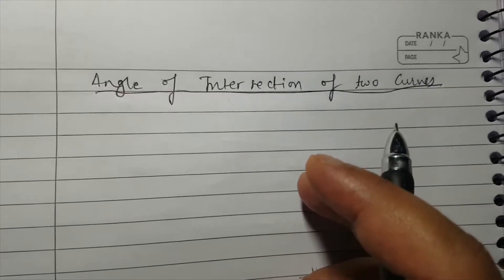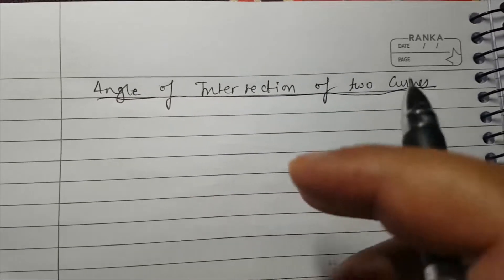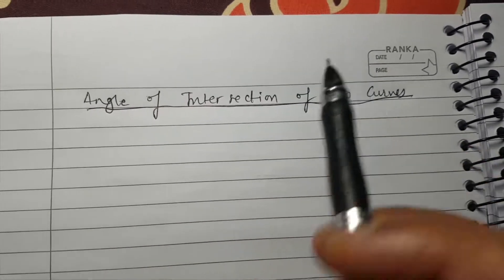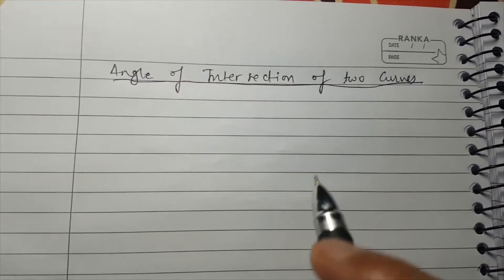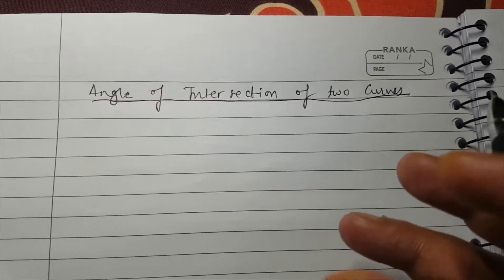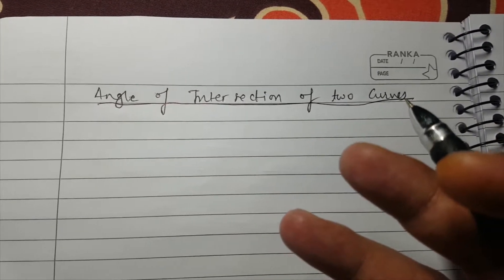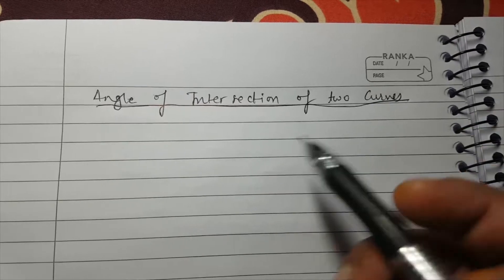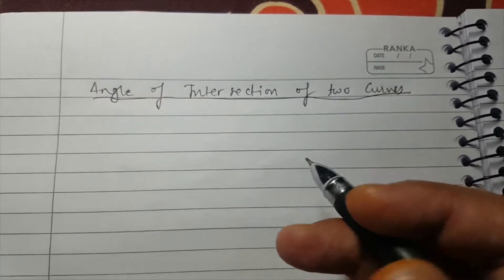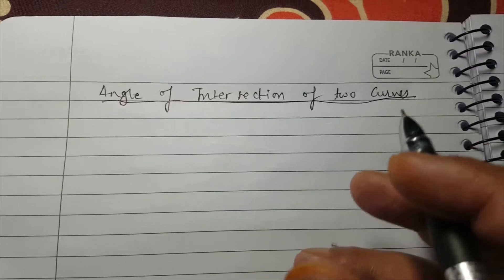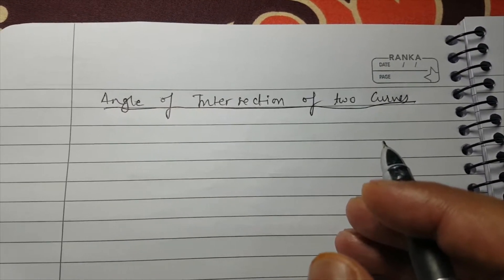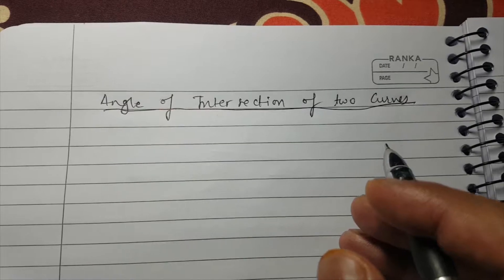Hello guys, today we are going to find out what is the formula for the angle of intersection of two curves. First of all, let me tell you what angle we are talking about when we say the angle of intersection of two curves. The angle of intersection of two curves is defined to be the angle between the tangents to these two curves at the point of intersection.